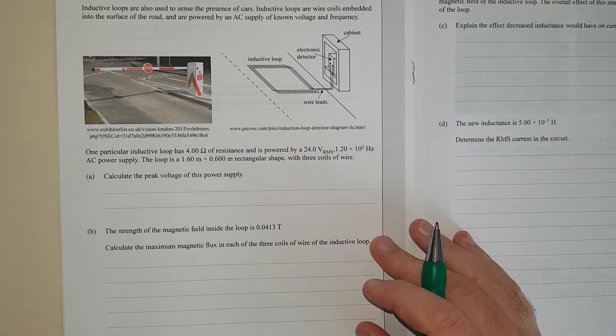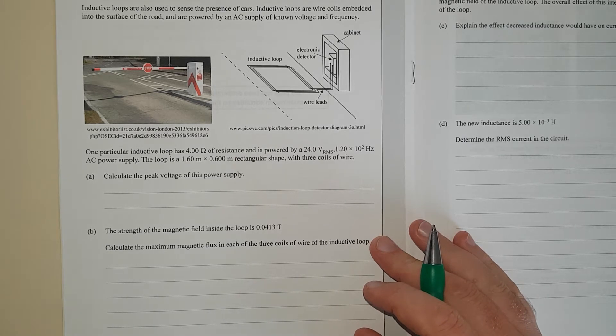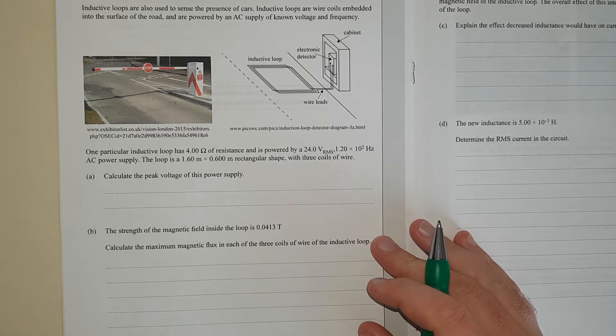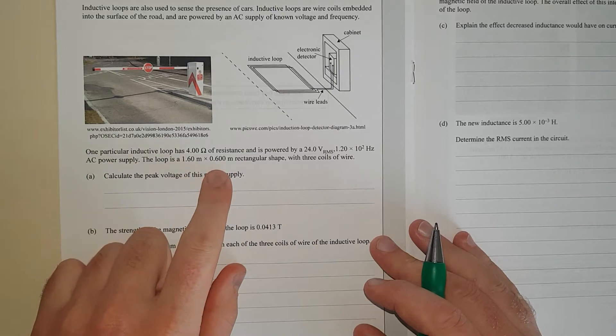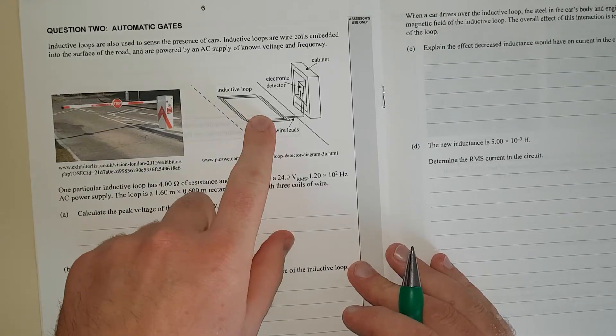One particular inductive loop has 4 ohms of resistance powered by 24V RMS (that's root-mean-squared voltage) and 120Hz AC power supply. The loop is 1.6 by 6 meters rectangular in shape.